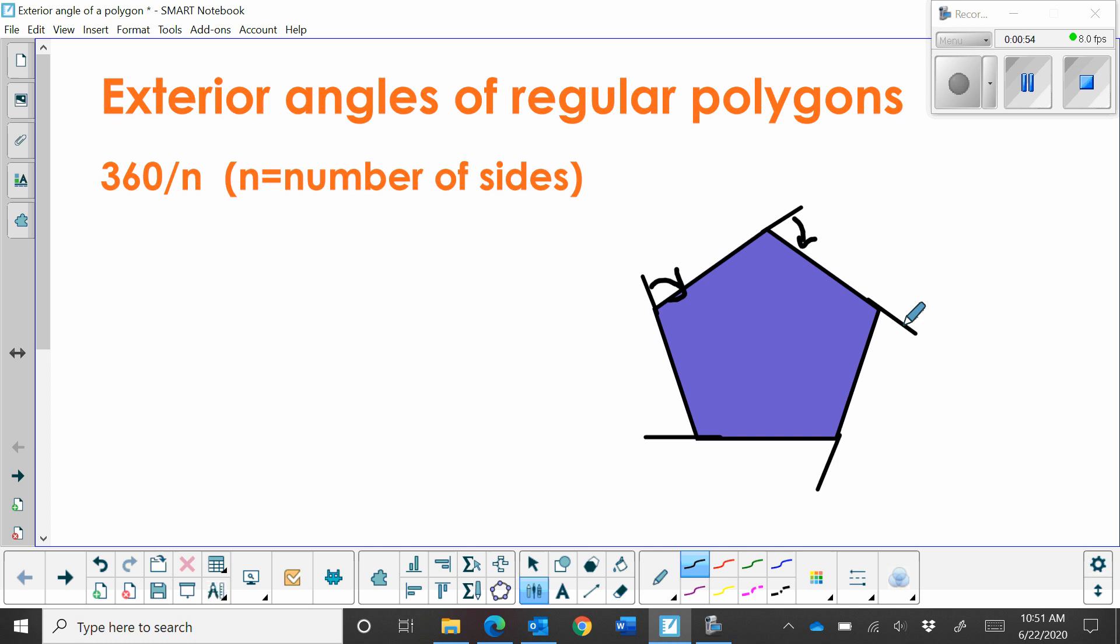Now what I've done is I've created these exterior angles. This exterior angle is what we're going to find the measure of. And the sum of these is 360.